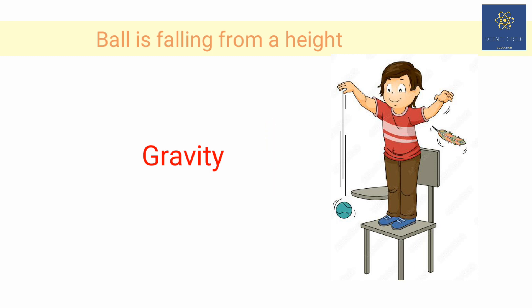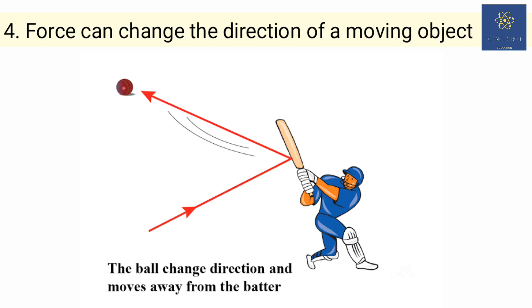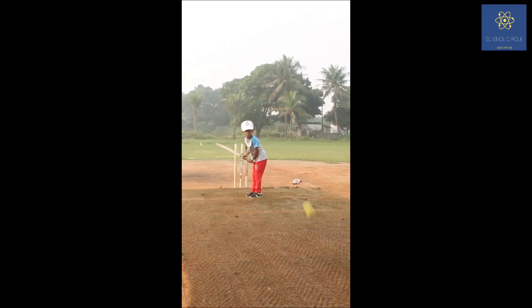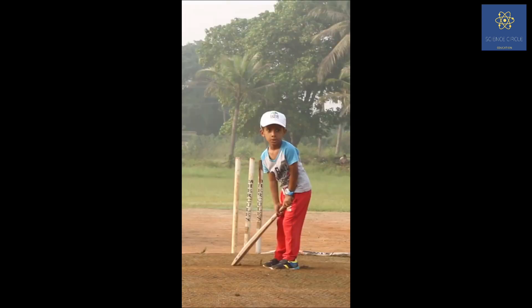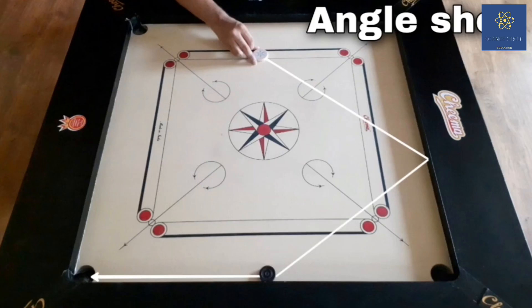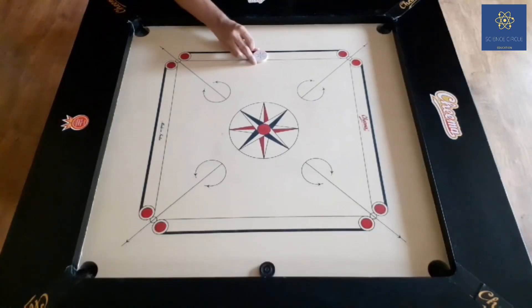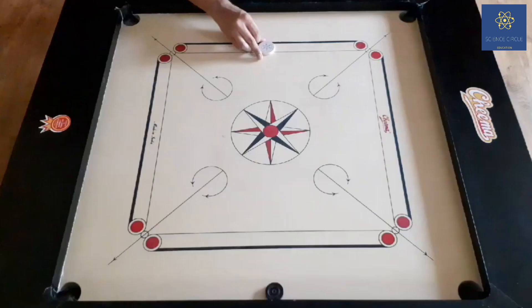Coming with the next point, force can change the direction of an object. When we see a cricket match, a batsman hits the ball coming from the bowler and it gets a boundary. Or when we are playing carrom, the striker changes the direction.